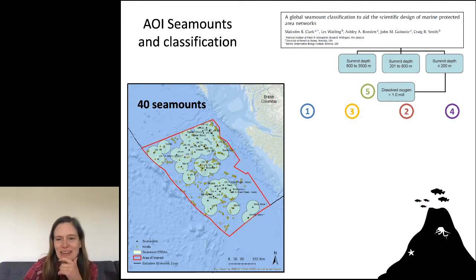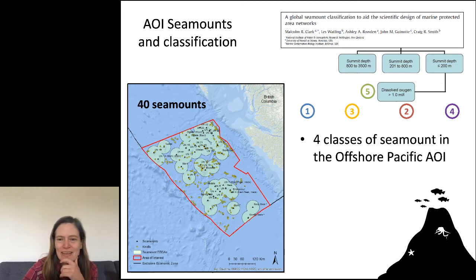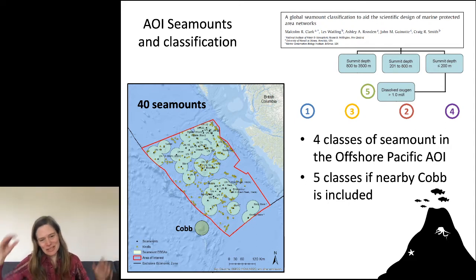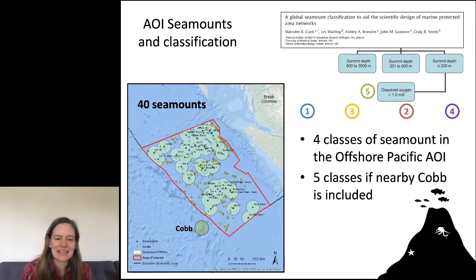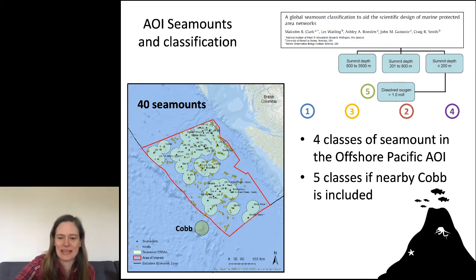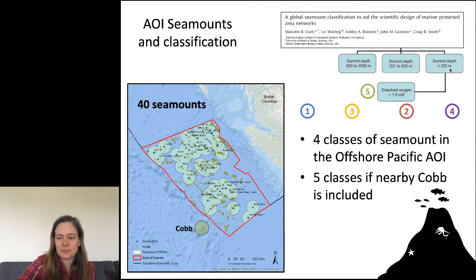There's a fifth class — Cobb Seamount — which is not actually in our area of interest and is outside the Canadian EEZ. My co-author Cherise has been working on efforts to protect Cobb Seamount. We included it here because it represents a fifth class, being shallower, but I won't show images from it.